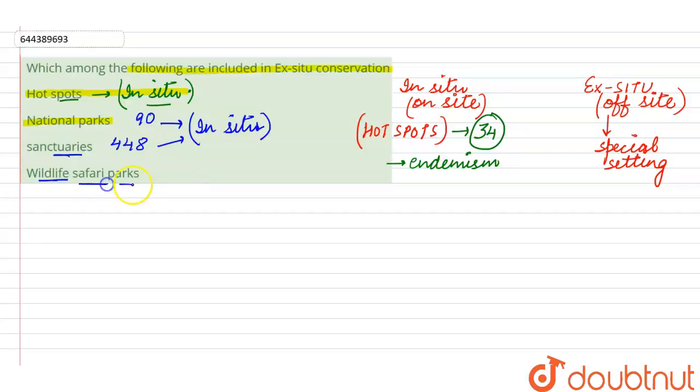Whereas the fourth option that is wildlife safari parks, this option is a right option for this question because this constitutes the ex situ conservation where the animals are taken out and then they are put in the safari parks for special care and then they are preserved or the prevention of extinction will be done.